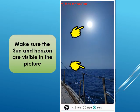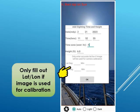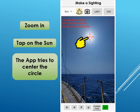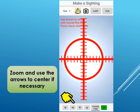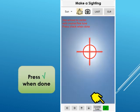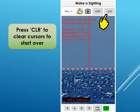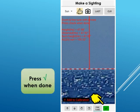Hold the camera such that the celestial body and horizon are in the picture. You can lighten or darken the image as needed. When satisfied with the image, press the shutter button to take the picture. In the dialog box, enter your height above the water. Only fill in the latitude and longitude if used for calibration. Zoom in and tap on the sun — the app will try to center a circle on it. Use the arrows on the bottom to center if necessary. To achieve better accuracy, press the fine-tune button to move the circle one pixel at a time. Depending on your phone, a pixel error may cause more than a 2 nautical mile error in distance. Press the green check mark when done. Now zoom in and tap on the horizon, and use the fine-tune, arrows, and rotation buttons to accurately place the dashed line directly on the horizon. You can press the clear button to clear the cursors and start over. Press the green check mark when satisfied — that is, when the sun circle and horizon lines are within a pixel.